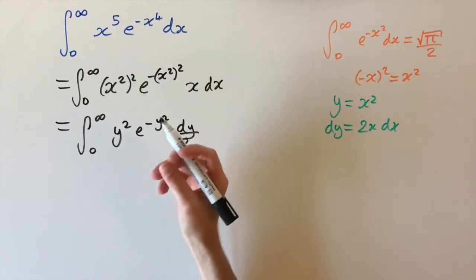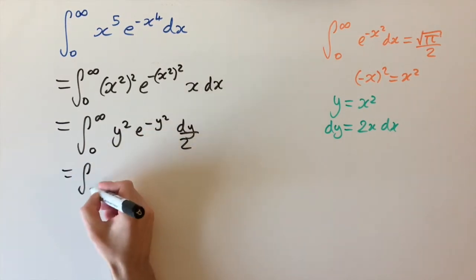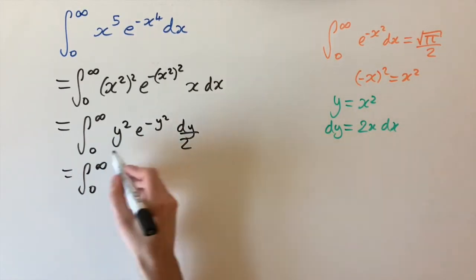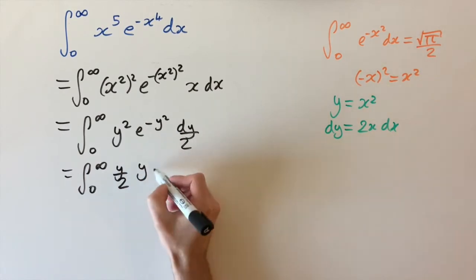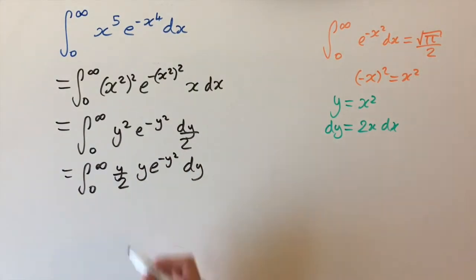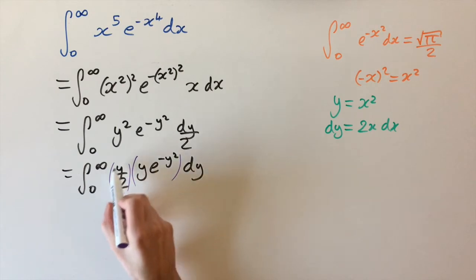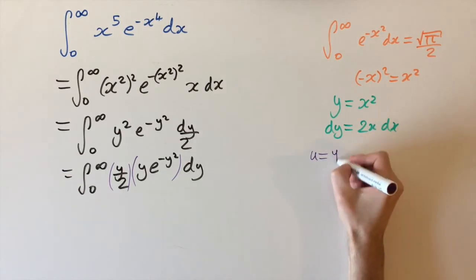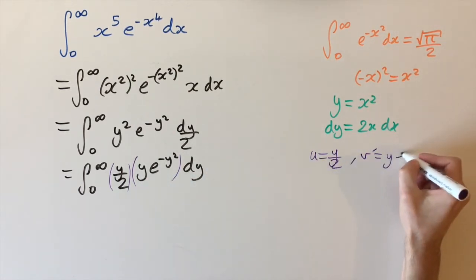A way to eliminate the y squared factor is to use integration by parts. We need to rewrite the integrand as a product of two things — one to differentiate and one to integrate. Bringing the 2 to the front, we write y over 2 times y times e to the minus y squared dy. We let u equal y over 2 (to differentiate) and v' equal y times e to the minus y squared (to integrate).